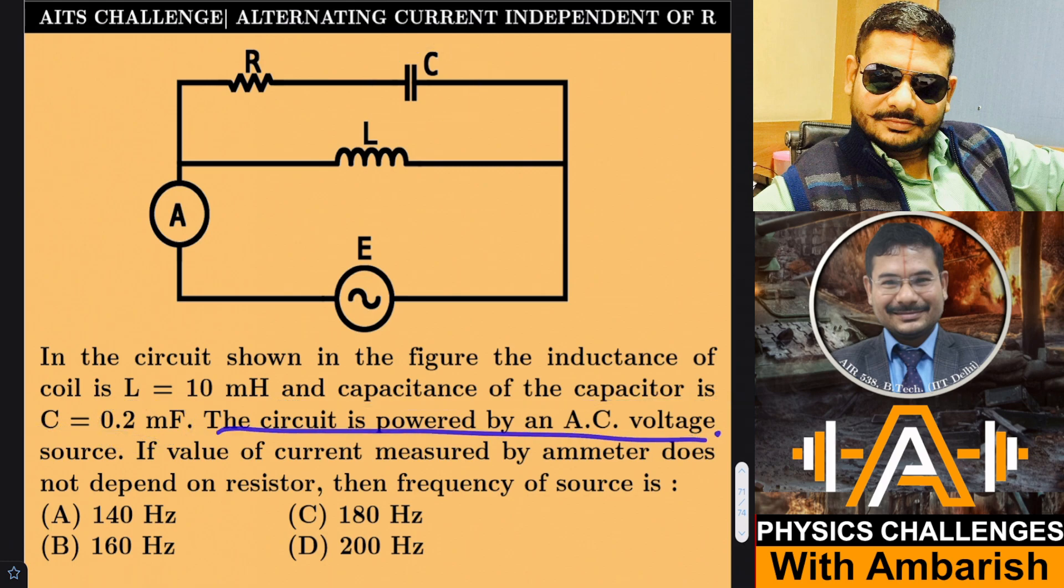The circuit is powered by an AC voltage source. If the value of the current measured by the ammeter does not depend on the resistor, then the frequency of the source is - there are four options: 140 Hertz, 160 Hertz, 180 Hertz, and 200 Hertz.